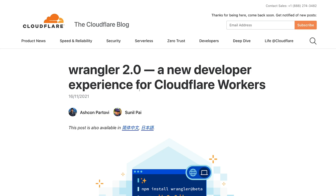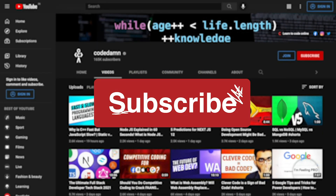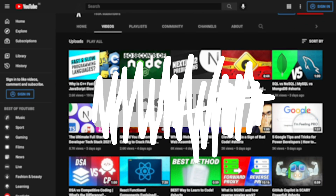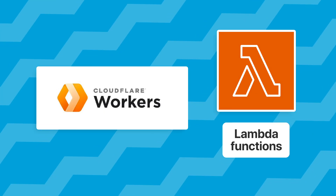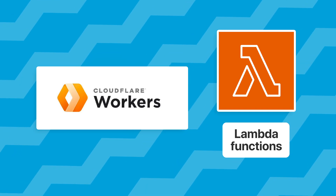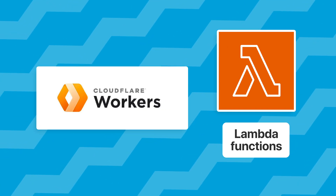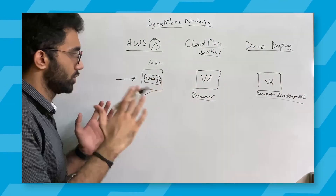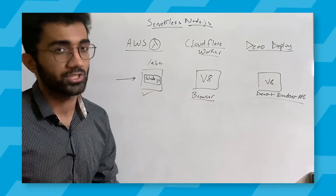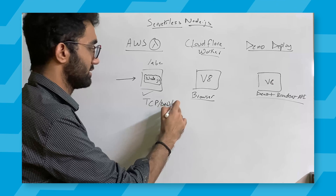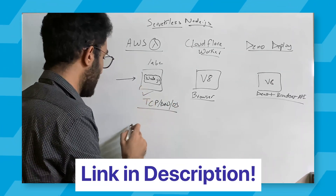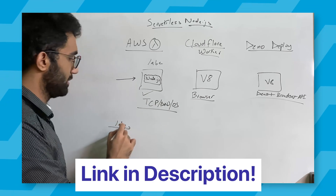It makes a lot of sense to cover some of their tooling here on CodeDam. If you're new here, make sure you leave a like and subscribe. Workers are essentially lambda functions — like AWS Lambda, but in a different environment. I've done a video on Node.js and JavaScript different runtimes where we cover Workers, AWS Lambda, Deno, and more — feel free to check that out.